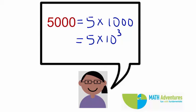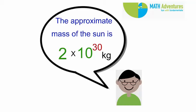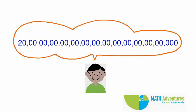Scientists and engineers like to write numbers this way. For example, the approximate mass of the sun is 2 into 10 power 30 kilograms. It would be hard to write 2 with 30 zeros. Therefore, the power notation helps us write large and small numbers.